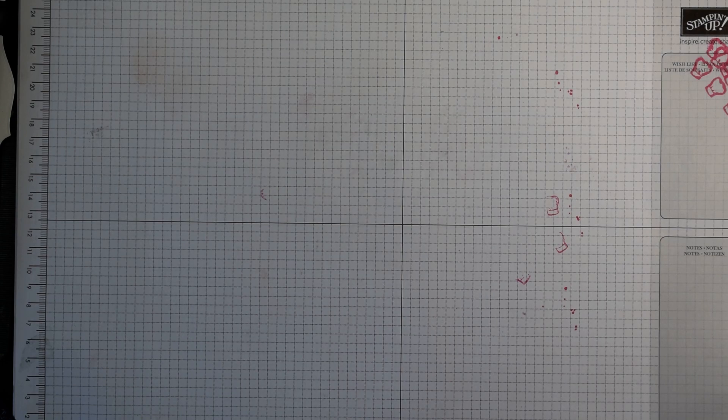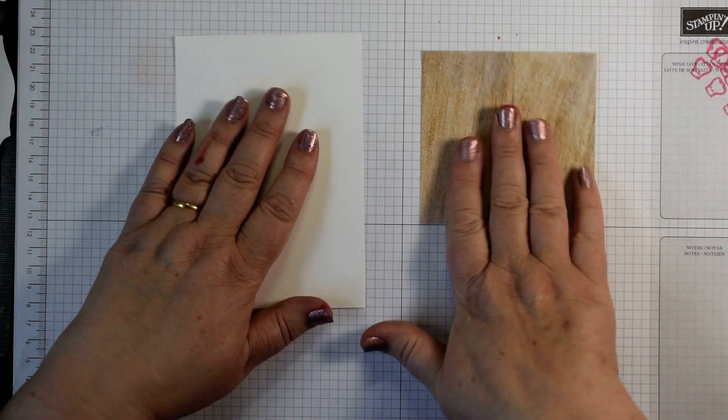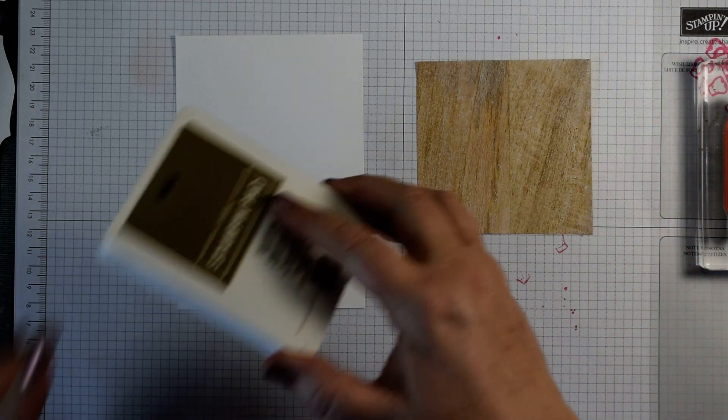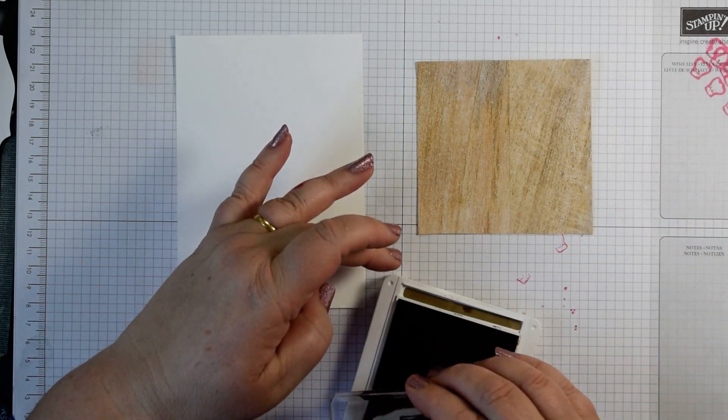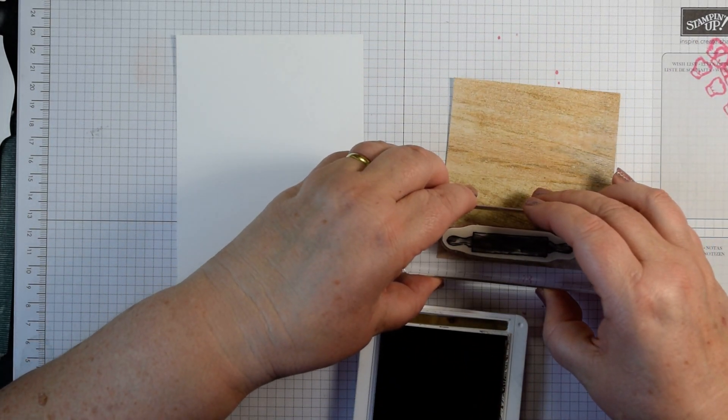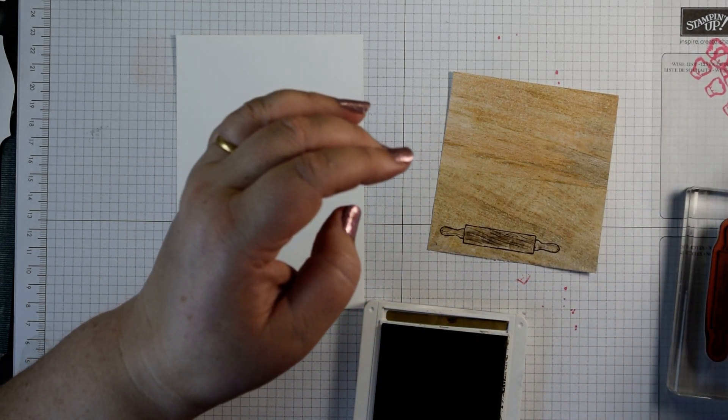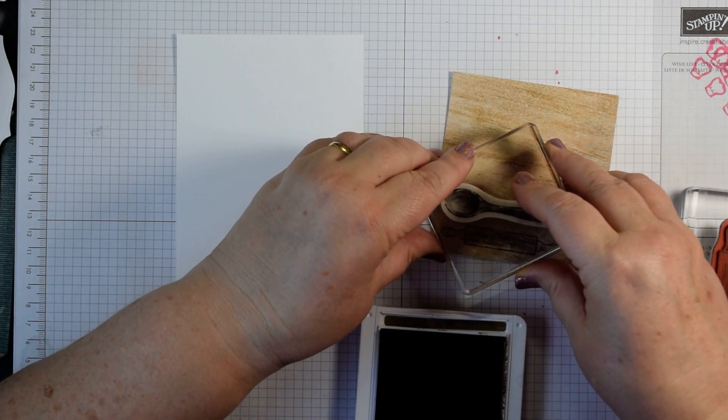Grab yourself some scrap whisper white or basic white. I've got some of the wood grain paper and I've actually gone for the slightly darker one, using soft suede here, and just stamp the images on there.